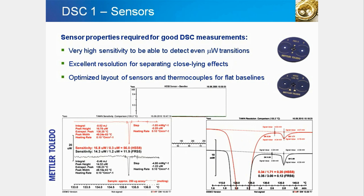The sensors in the Mettler Toledo DSC-1 are the most important components of the instrument — they determine the quality of the measurement. Two different sensors are available for the DSC-1. The most frequently used is the full-range, or FR-S5, sensor. The high-sensitivity, or HSS-8, sensor is recommended for samples that produce only a very low signal intensity. The bottom part of the slide displays results comparing the sensitivity and resolution of both sensors. Better sensitivity means it is possible to detect smaller thermal effects, or to use smaller sample amounts. The measurements were performed according to the TAWN test guidelines, a universally recognized procedure used to test the performance of DSC instruments.